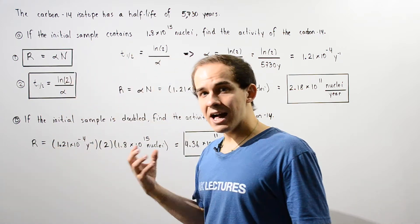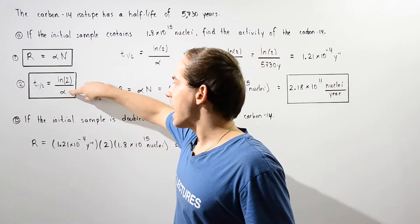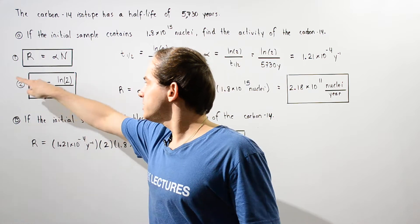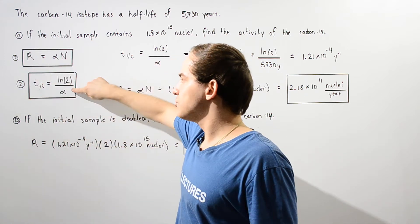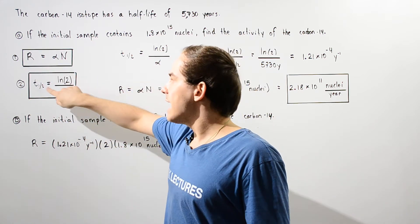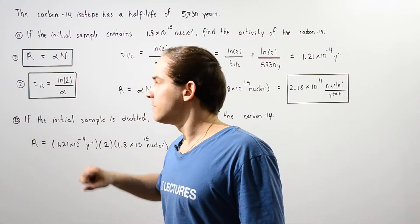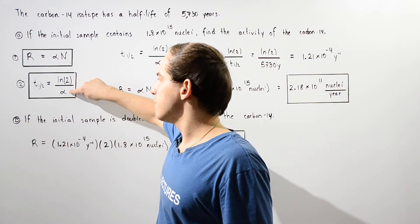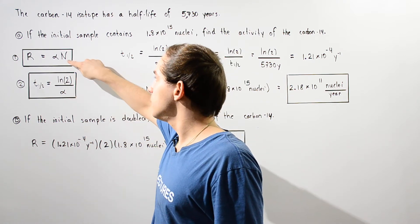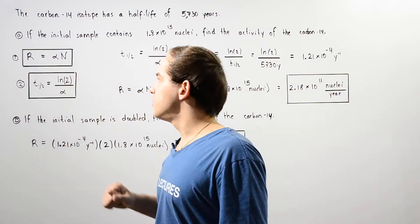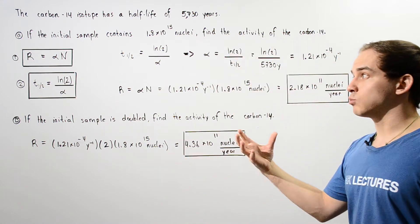Equation two gives us a way to calculate alpha. If we rearrange it and know our half-life, we can calculate alpha, then use that value to calculate the activity. That's exactly what we'll do.